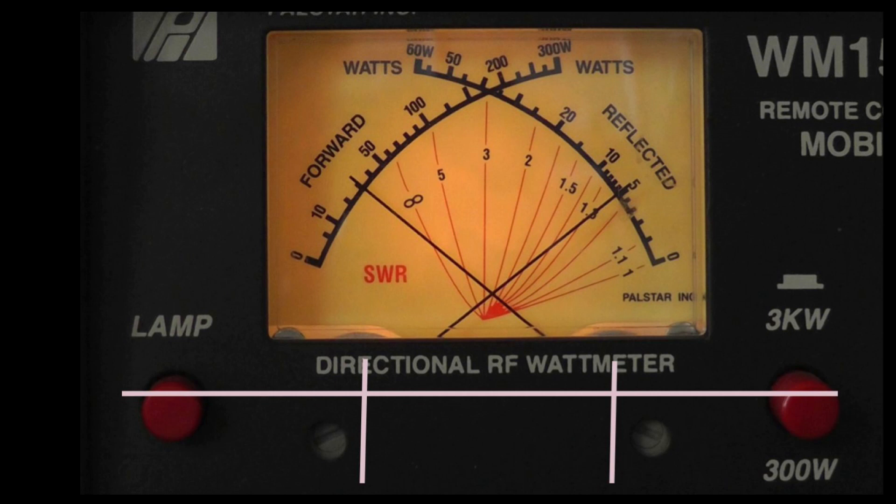On this next chart we've got about 30 watts forward and about 5 watts return, and we see that the needles actually cross above the 2 to 1 mark a little bit. So your SWR is probably about 2.2, something like that.